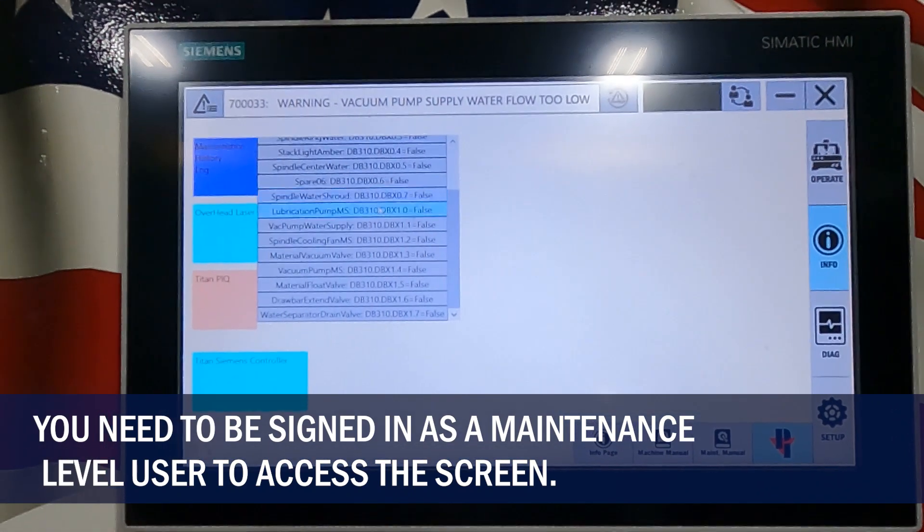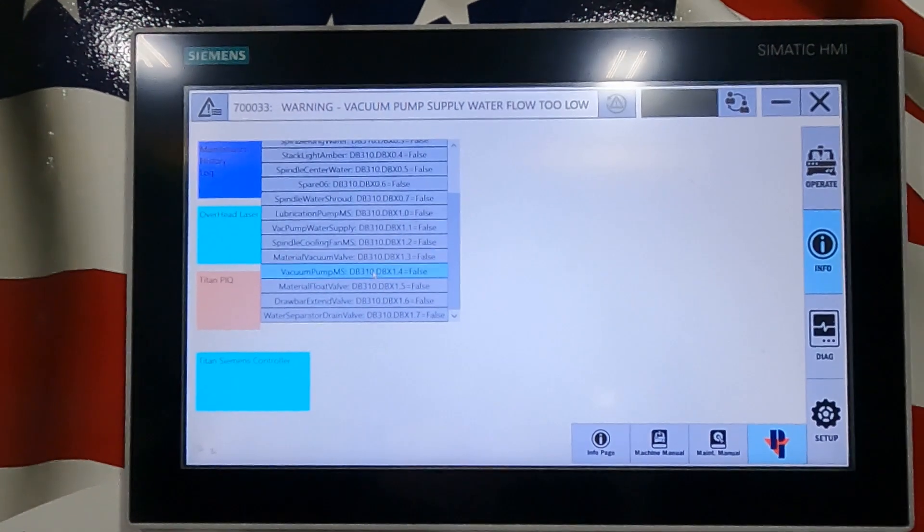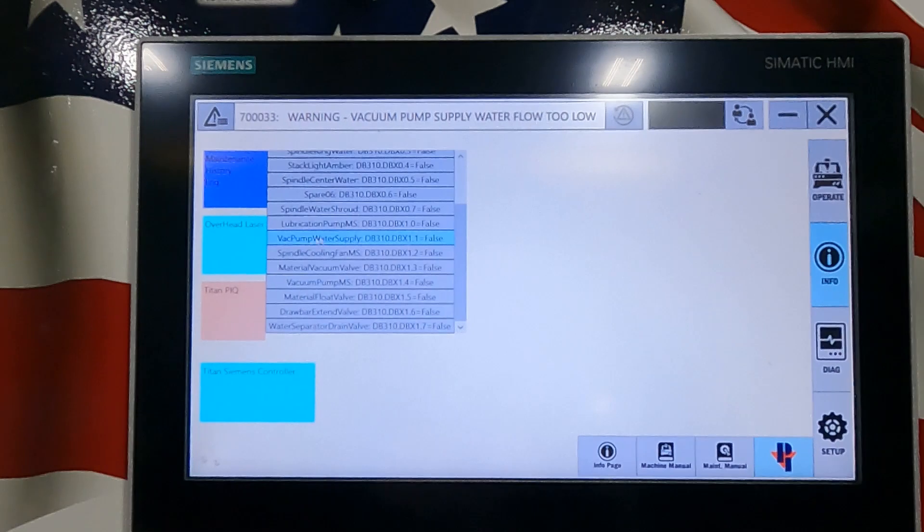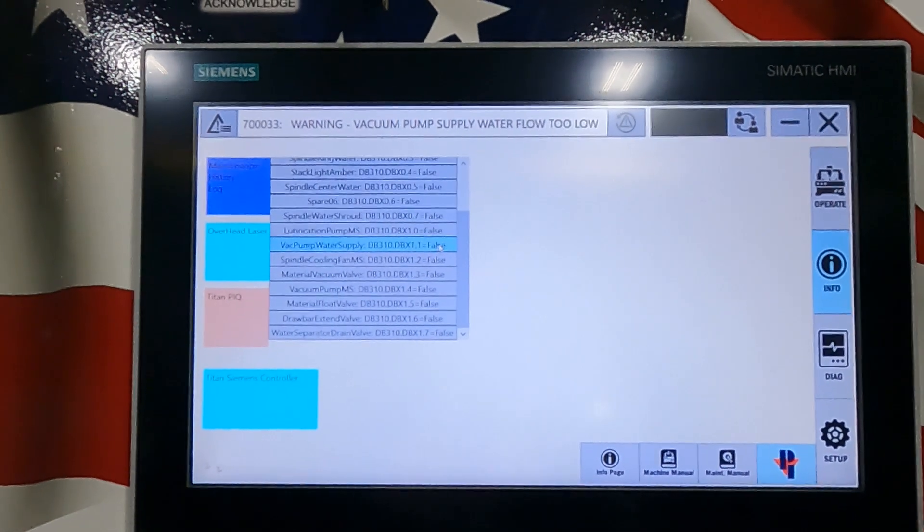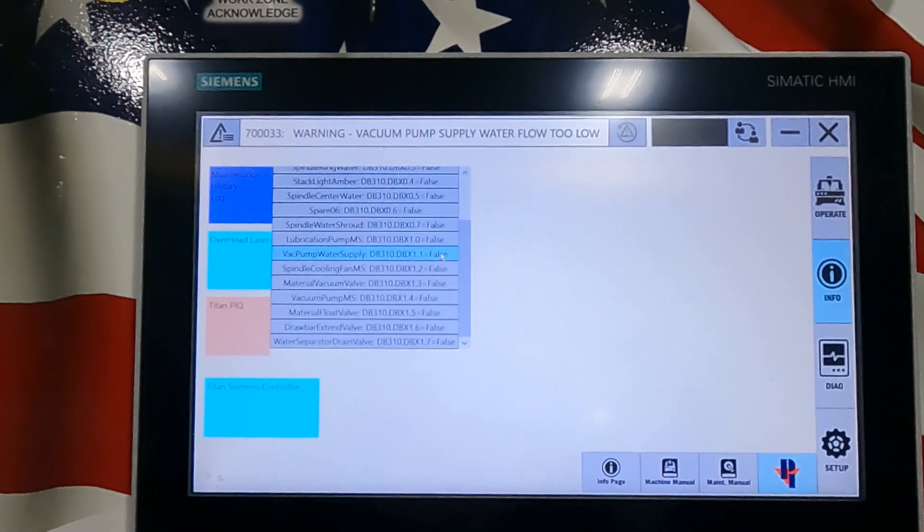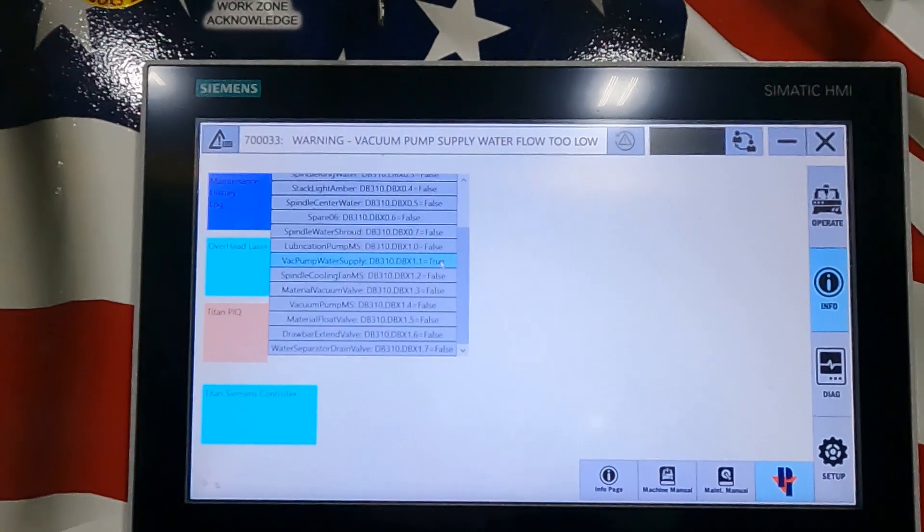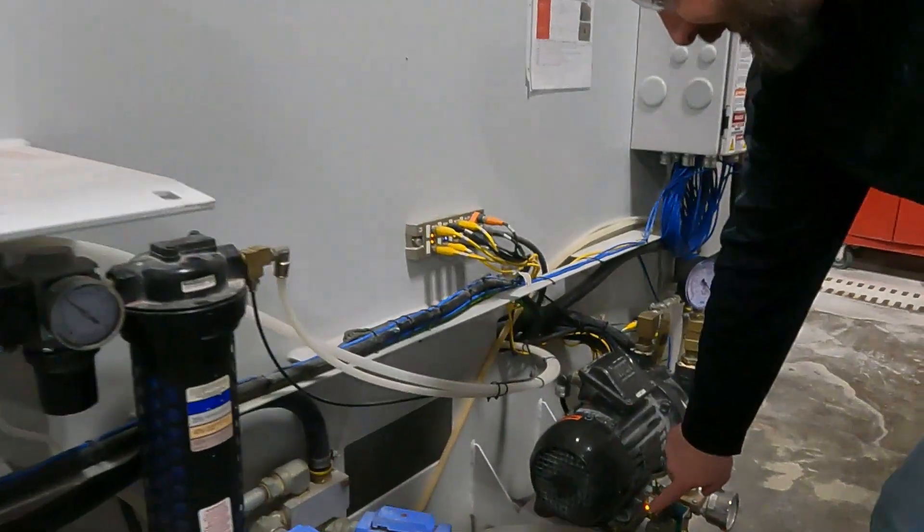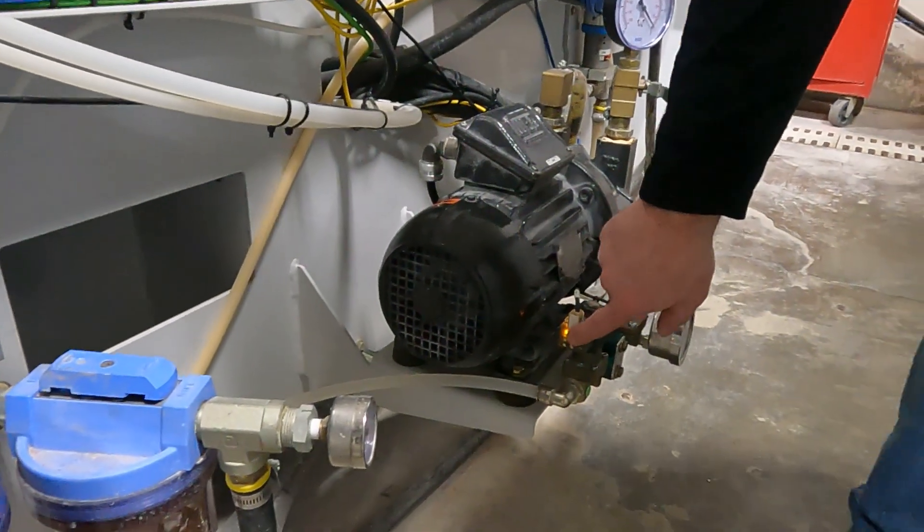Here are our outputs that we can manually turn on and we are just looking for vacuum pump water supply. It's false because it's turned off right now so we just click it. That'll turn to true. And then you will see here that this LED should turn on for you.